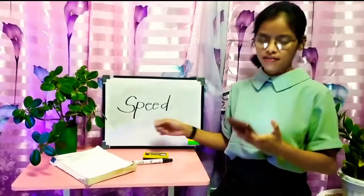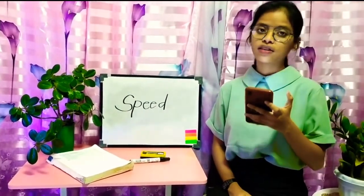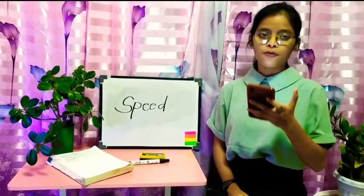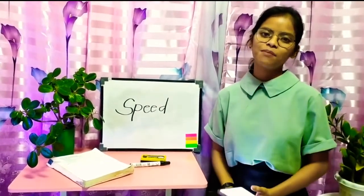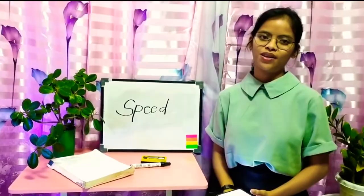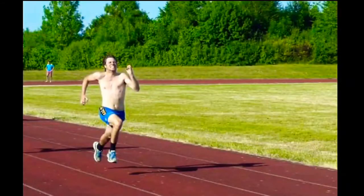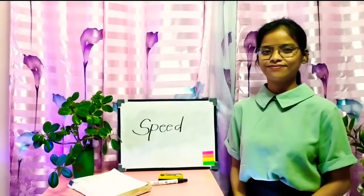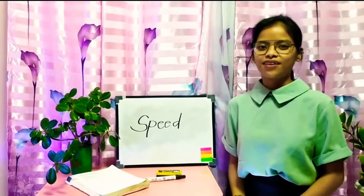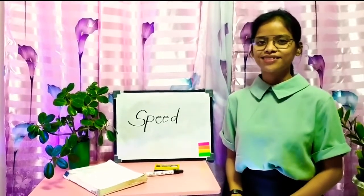Speed is the ability to move quickly across the ground. For example, the 40-meter sprint. Here's a photo of the sample. We need a place to run 40 meters and a timer.